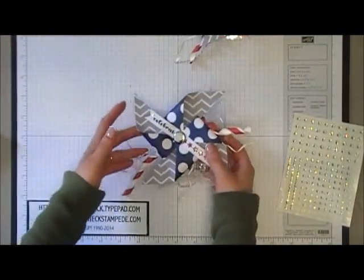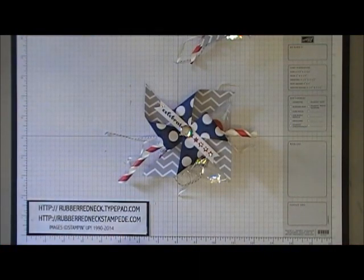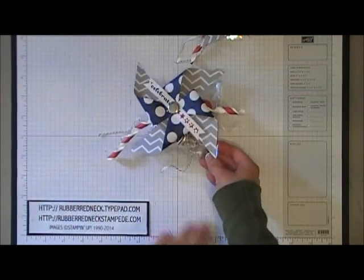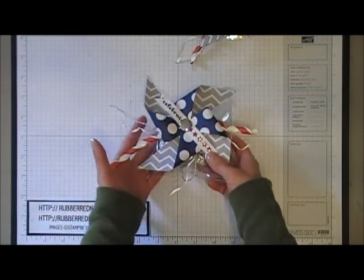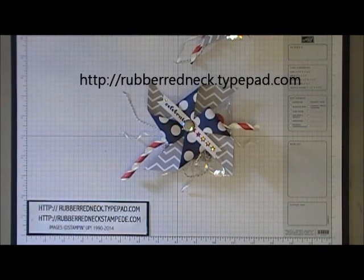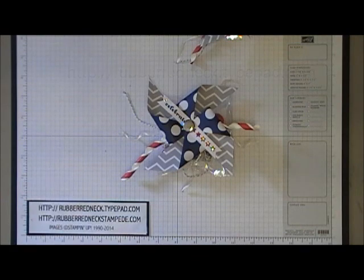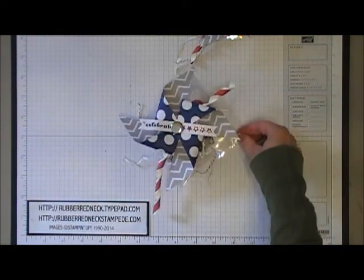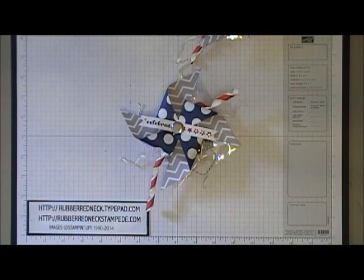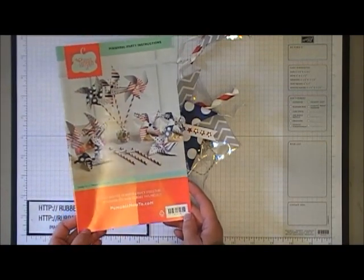And then once you're done, you'll have this fun, cute little decorated treat bag to give out to your party guests or if you have children to celebrate 4th of July. Now, you'll want to visit my blog, rubberredneck.typepad.com. I will have all the directions listed in a blog post for this, for you to just copy and paste. And if you would like more information about the paper pumpkin kits and how to receive those in the mail, then please visit my blog for all the details. Thank you for watching.